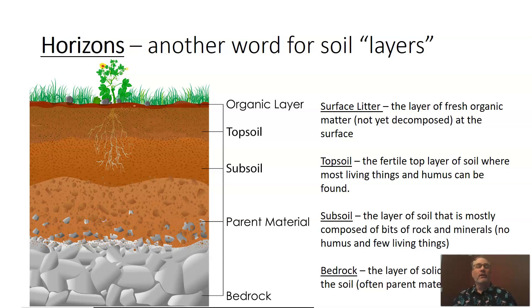When we move below that topsoil, our next horizon — our next soil layer — is called subsoil. In subsoil we don't really find a lot of living things. We might occasionally have animals burrow deeply into the subsoil, but really this is just going to be lots of minerals and lots of weathered rock. You're not going to have any humus in there, and very few living things will be in our subsoil. As we discussed when we talked about Earth's crust, underneath this subsoil we get down to a layer of solid rock called bedrock. We can often learn about the soil by seeing what kind of rock was weathered to make it.